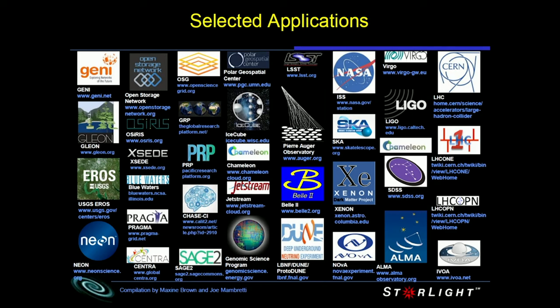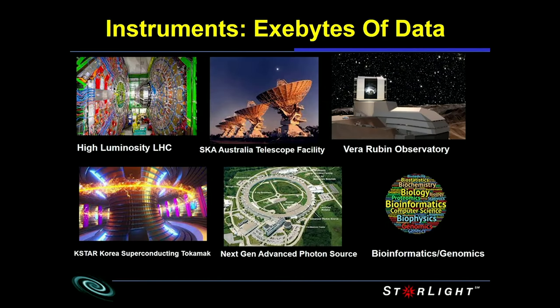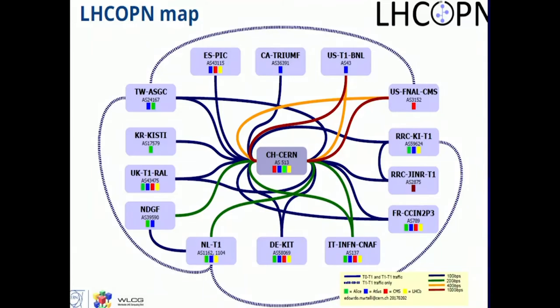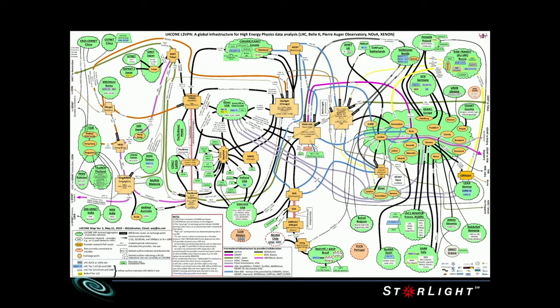These driver applications, especially large-scale instrumentation that generates data which has to be moved around the world, are key. A nice model for this is the LHC. Harvey put together some of the architecture for this — the LHC Optical Private Network, which provides high-performance interconnects among the Tier 1 analytic centers. There's also an LHC Open Network Environment connecting the Tier 1s, Tier 2s, and Tier 3s. It's been very successful and is a model of where things are moving.